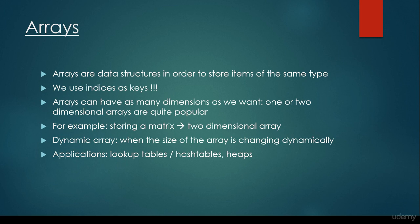In order to store a matrix, we have to use two-dimensional arrays, as we have seen. Basically, an array can be dynamic. It means that the size of the array can be changing dynamically. And the applications of arrays are lookup tables or hash tables or heaps, for example. So several abstract data types use arrays as an underlying data structure.